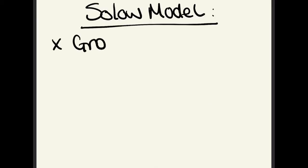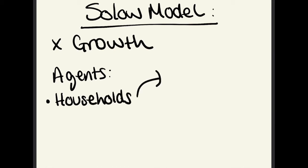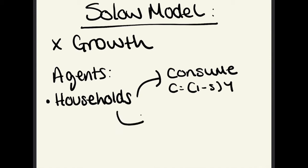Moving on to the actual model: the Solow model is all about countries' growth — how they grow — and the ability to compare growth between countries. The first agents in the model are households, which represent the general population. They do two things: first, they consume, with the equation c equals (1−s)y, meaning consumption is income minus whatever we save, since s·y is a proportion of income. The second thing people do is work — they supply labour.